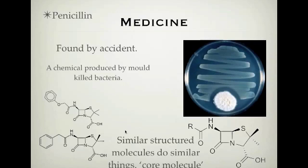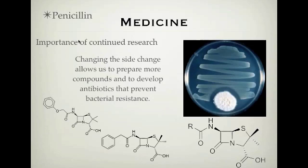If you have a medicine or molecule that looks similar to other things, we can say it will probably behave a certain way in the body. This leads to the idea of a side chain from a core molecule. This side chain allows us to change how bacteria detect our molecule — it can disguise it in certain ways. The importance of continued research means we don't just stop with one molecule, because bacteria can build up a resistance to a compound if we keep using the same one.